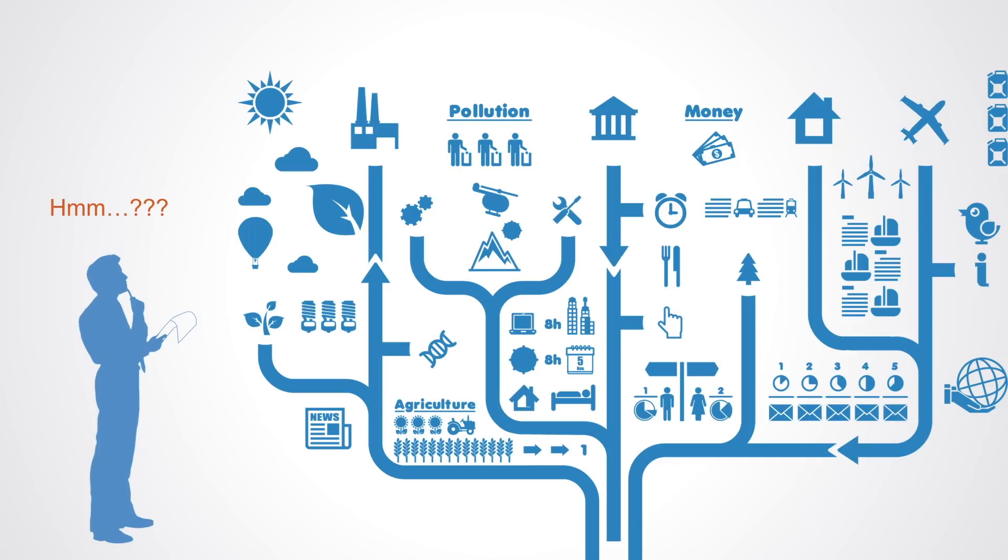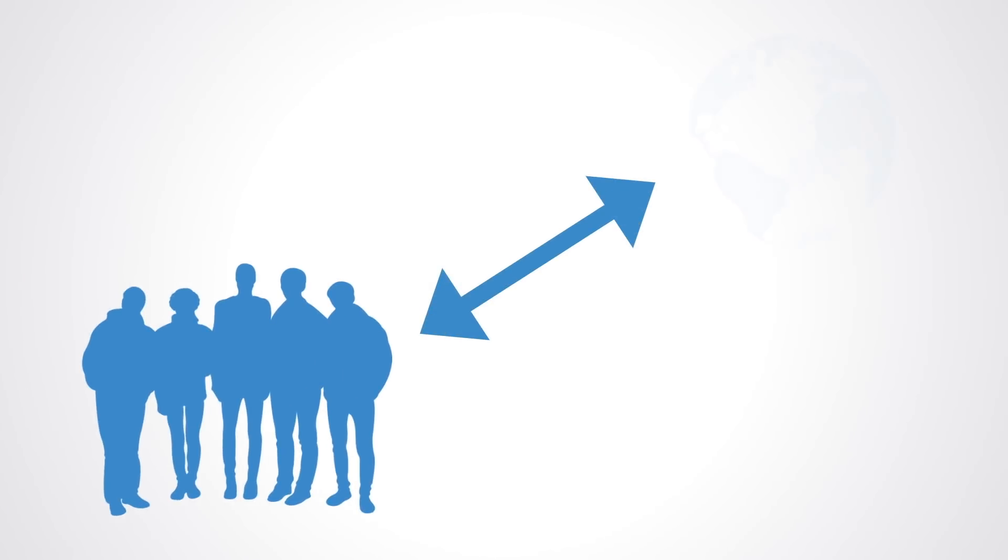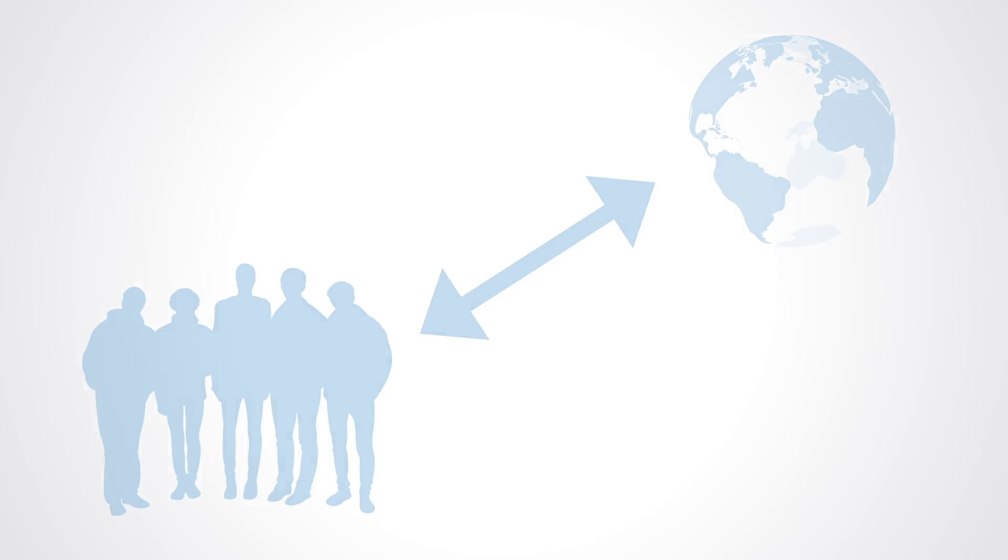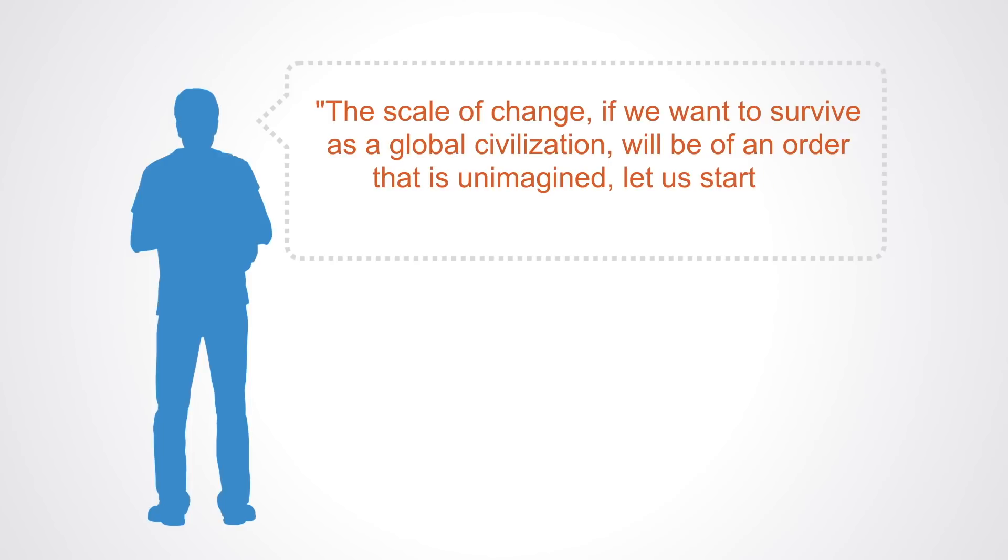We might say that it is part of the systems change movement to bring them into being as an example of possible ways forward. We highlight this in an attempt to ensure that systems change remains an active endeavor on all levels, both on the small scale but also on the largest scales possible. In a talk by Indy Johar, he framed the situation well by saying: The scale of change, if we want to survive as a global civilization, will be of an order that is unimagined. Let us start the conversation from that perspective.